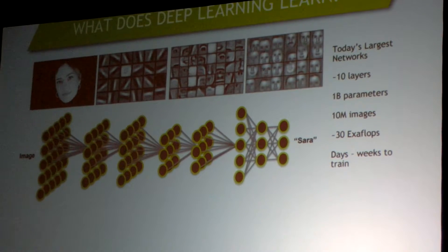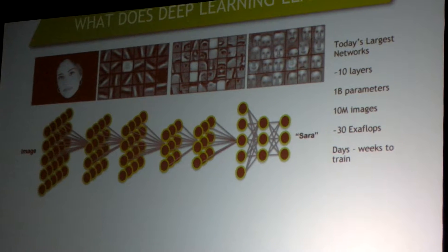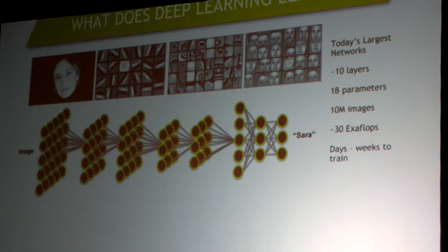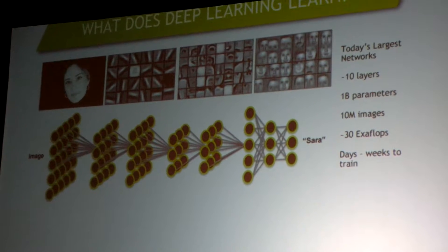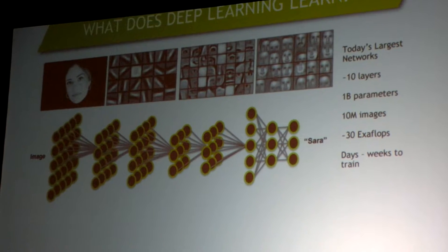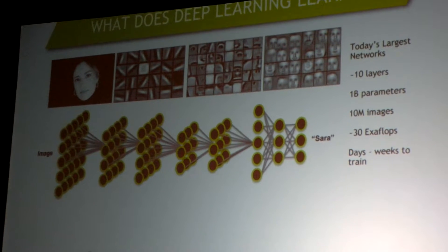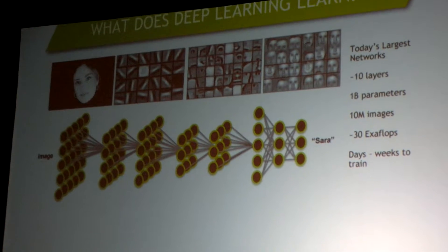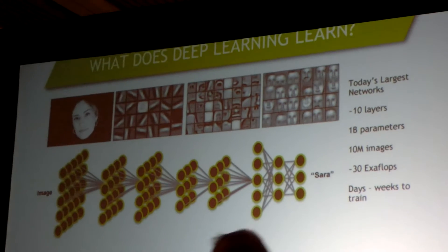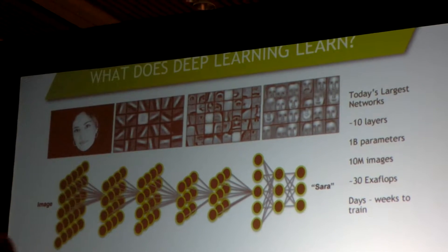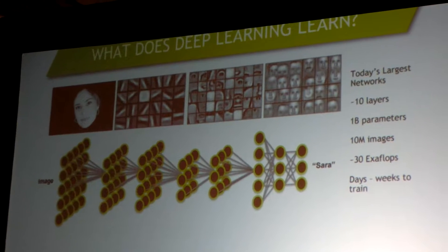The frameworks between deep learning and machine learning are more similar than they are different. But the one thing that machine learning doesn't do well is you need to apply a lot of domain expertise to make these handcrafted features. One of the big things with deep learning is that it uses incredibly complicated models with many more parameters to find the features themselves.